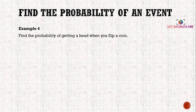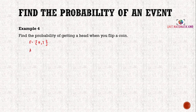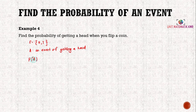For example, in your lecture notes it's given: find the probability of getting a head when you flip a coin. We know a coin has two outcomes, so the sample space is {H, T}. We denote the event as A — event of getting a head — so the probability of A is one over two.